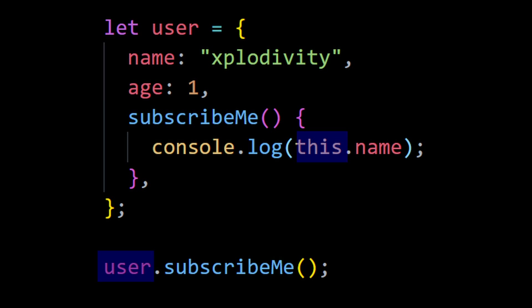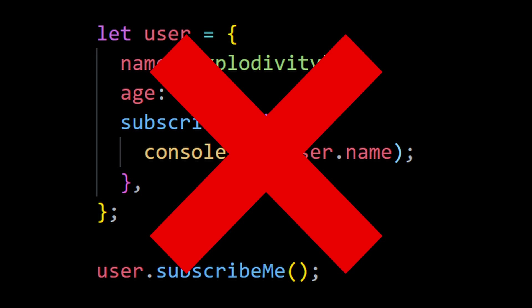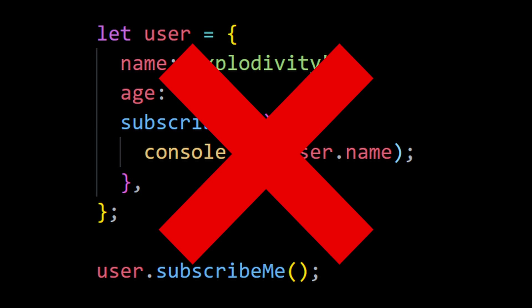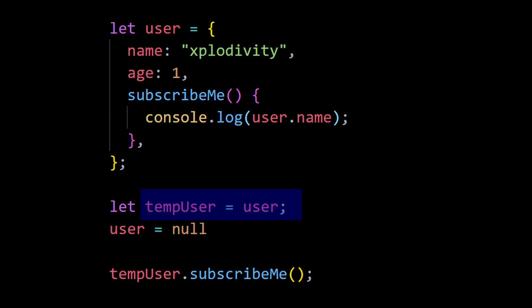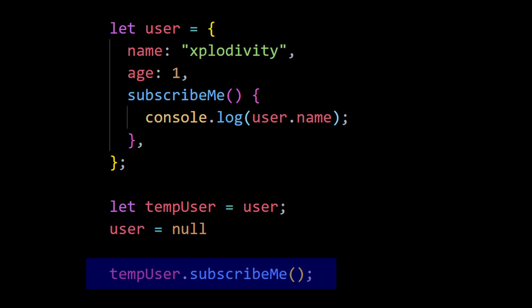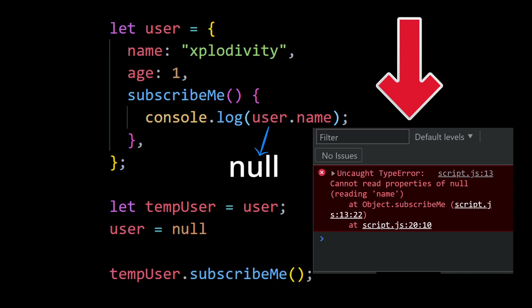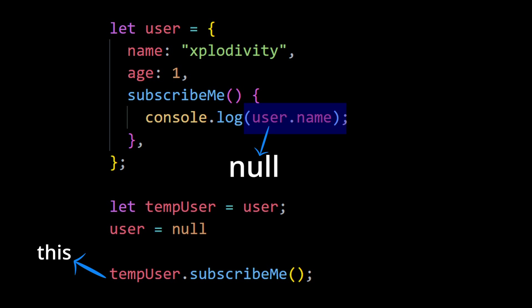Technically it's also possible to access object properties in a method without using 'this' — by referencing the outer variable directly, like user.name instead of this.name. However, this is not recommended because the code becomes highly unreliable. For example, if we copy user to a temp variable and then set user to null, calling tempUser.subscribeMe() will throw an error because user.name no longer exists.